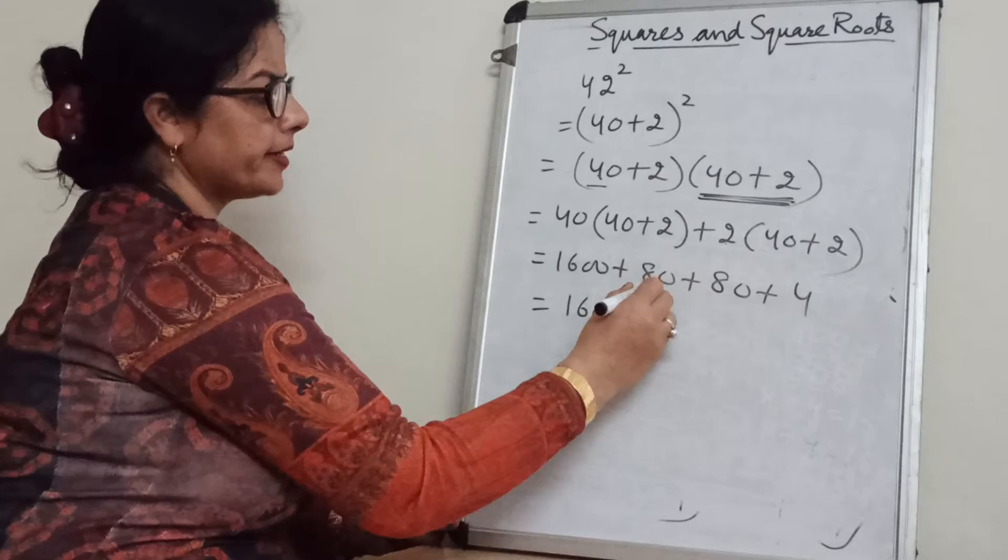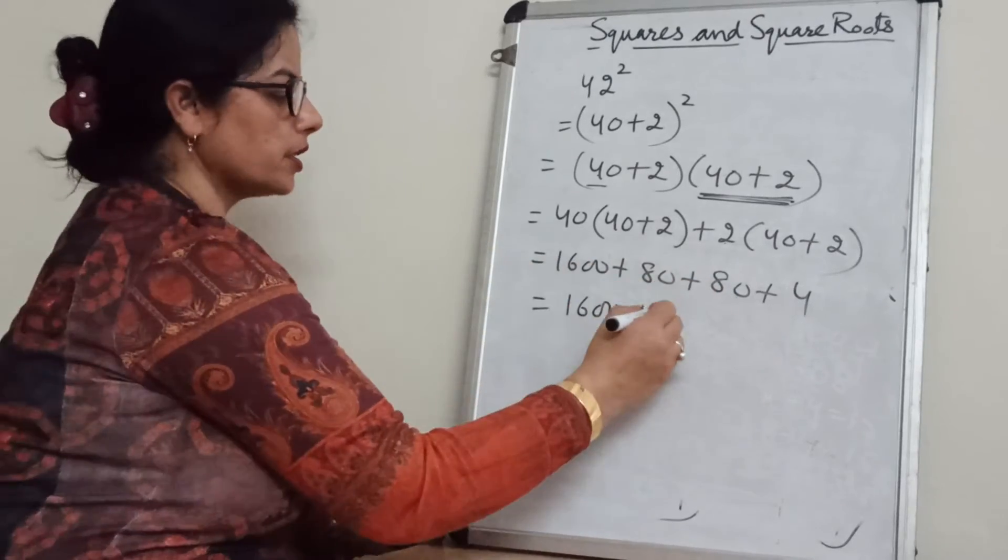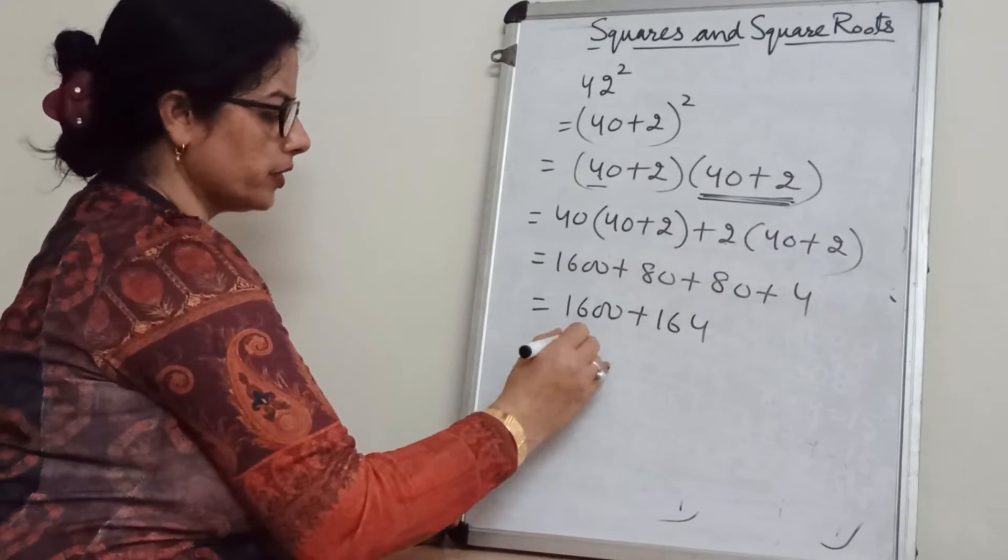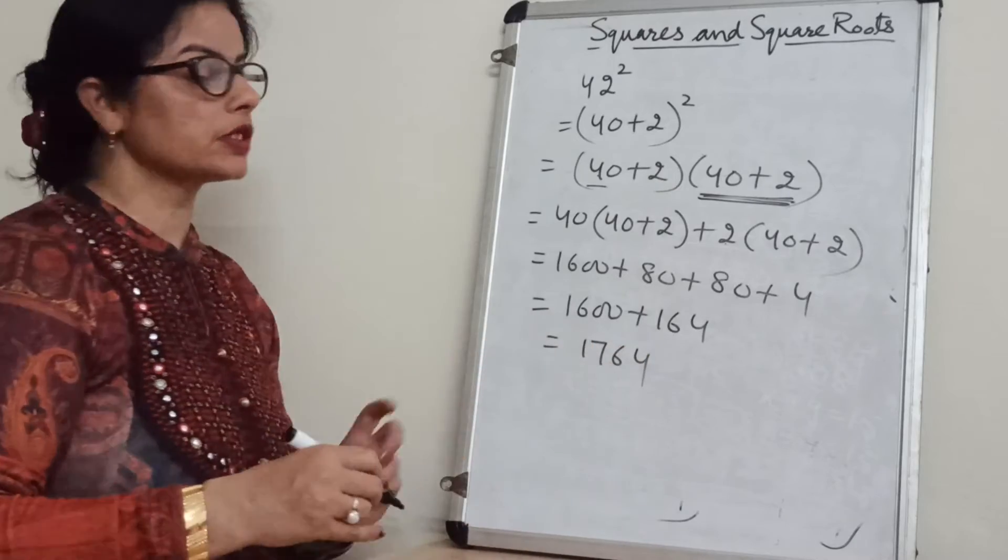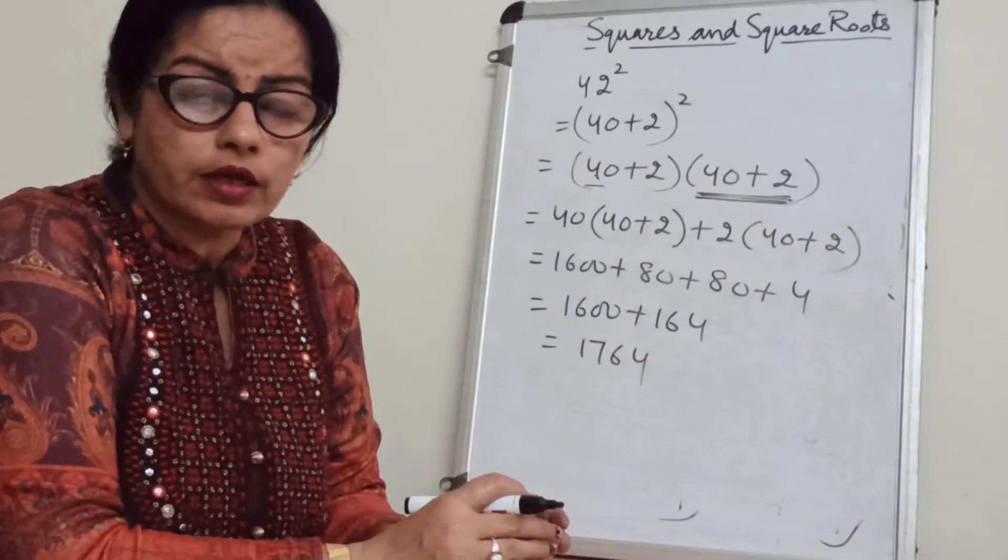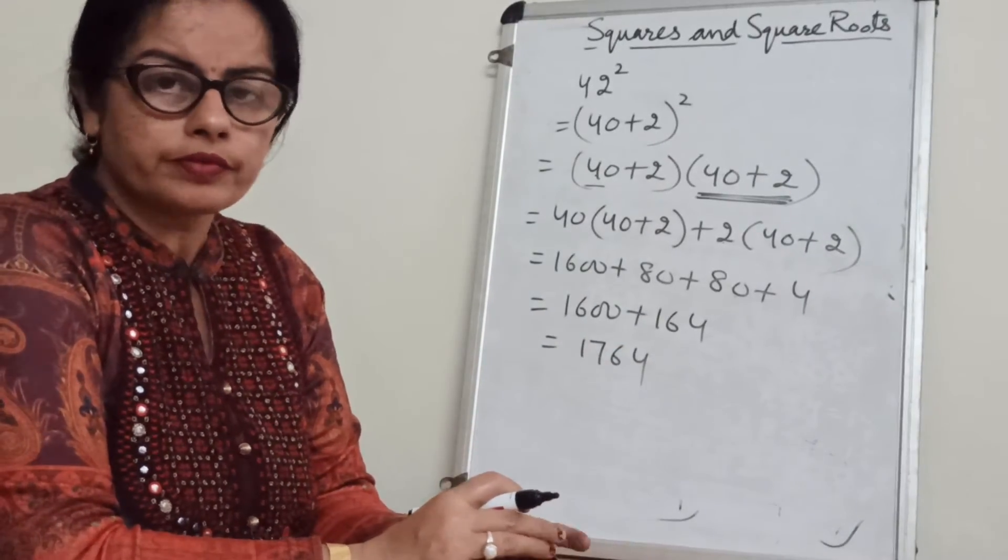1600 as it is. 80 plus 80, 160. 160 plus 4, 164. That is 1764. In this way you can find the square of any term.